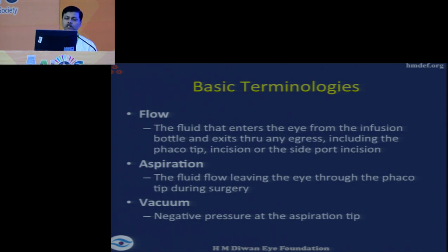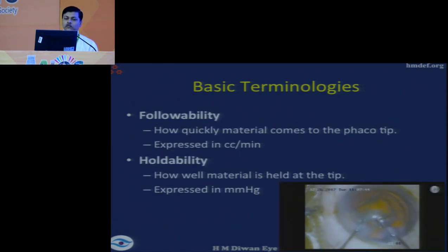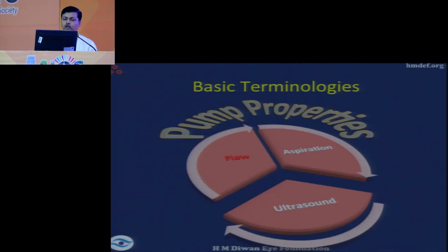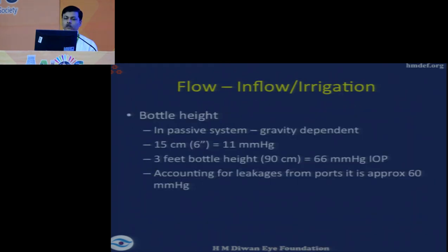Aspiration is the fluid leaving the eye through the phaco tip during surgery. Aspiration will not include the passive egress of fluid through the side port and main incision leakage. Vacuum is the negative pressure that exists at the aspiration tip, which causes the aspiration. Followability is how quickly the material comes to the phaco tip and it is expressed in cc's per minute. Holdability is how well the material is held at the tip and this is expressed in millimeters of mercury, making holdability a function of the vacuum.